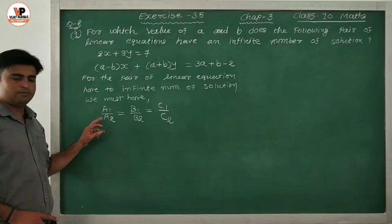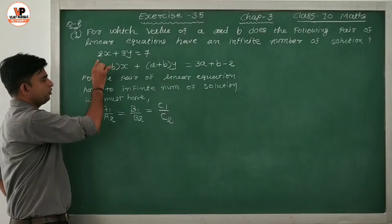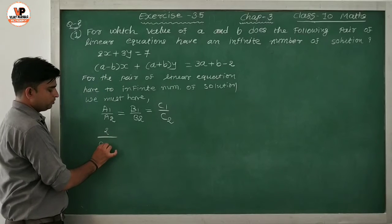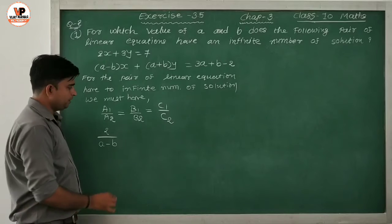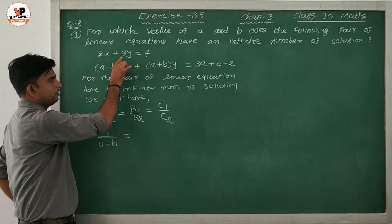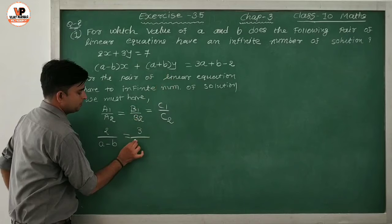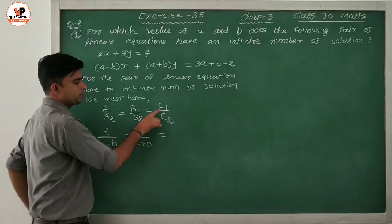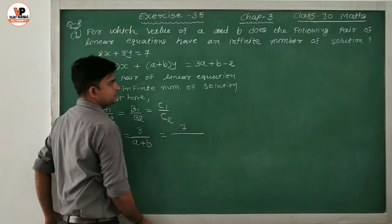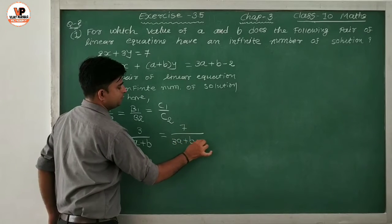Now in ratios hum compare karte hain. A1/A2: from the first equation A1 = 2, and from the second equation A2 = (A - B), so we get 2/(A - B). This is equal to B1/B2: from equation 1, B1 = 3, and from equation 2, B2 = (A + B). This is equal to C1/C2: from the first equation C1 = 7, and from the second equation C2 = (3A + B - 2).